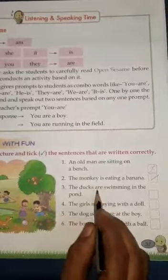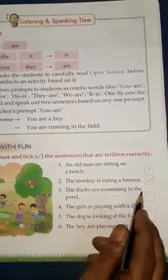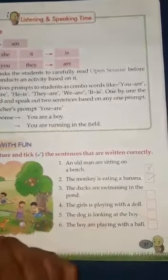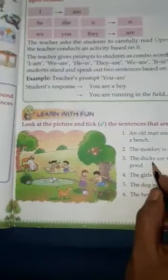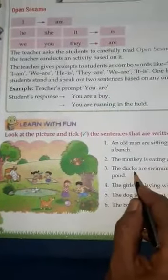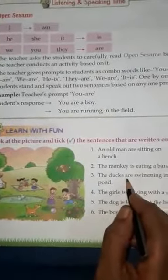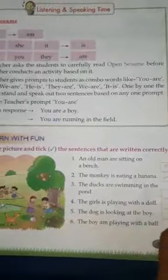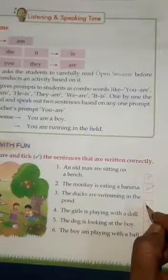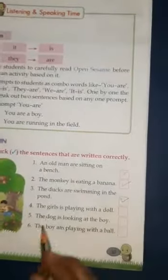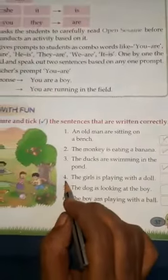Number three: The ducks are swimming in the pond. Ducks is a plural naming word and 'are' is used, so it is a correct sentence.